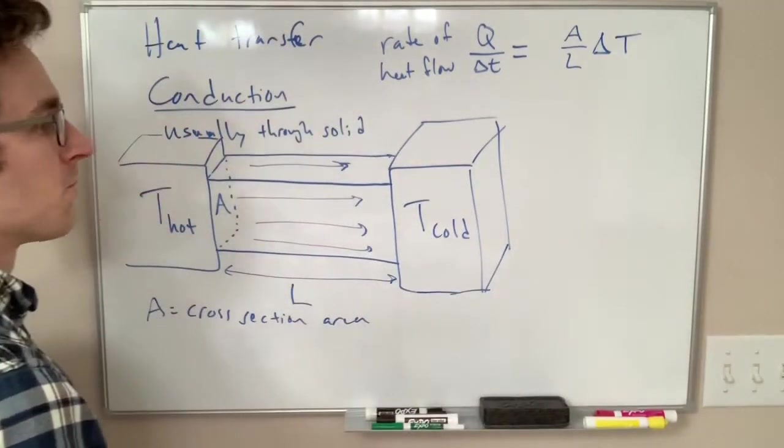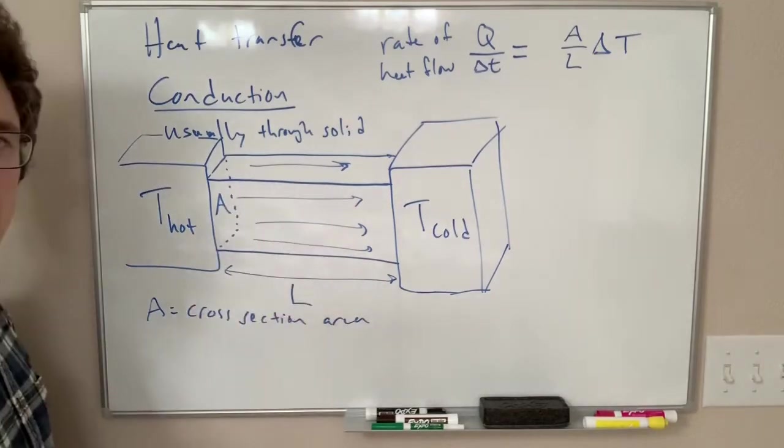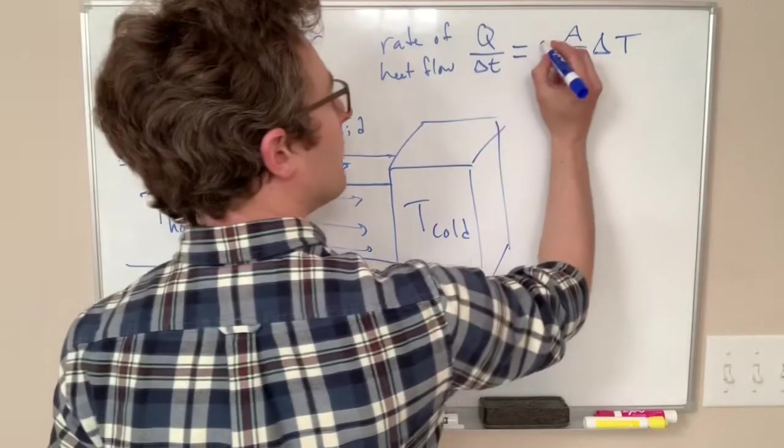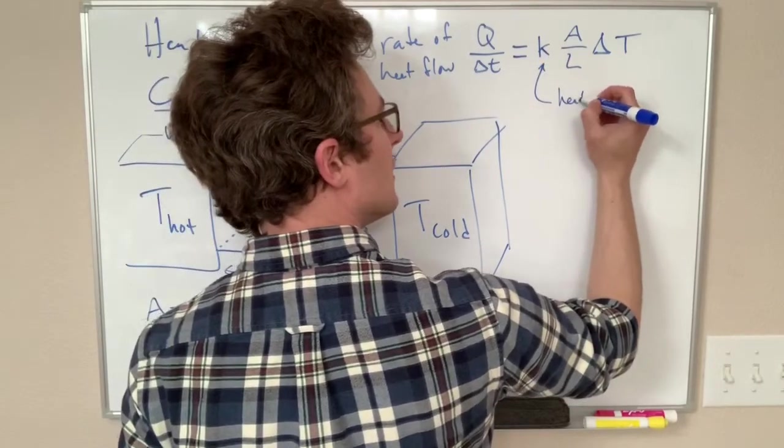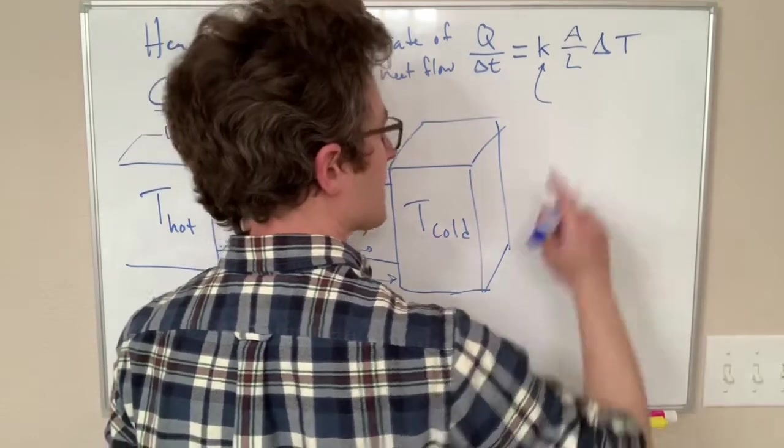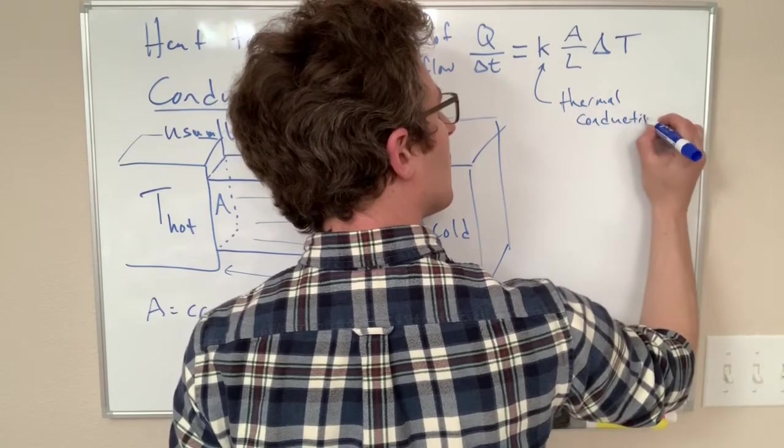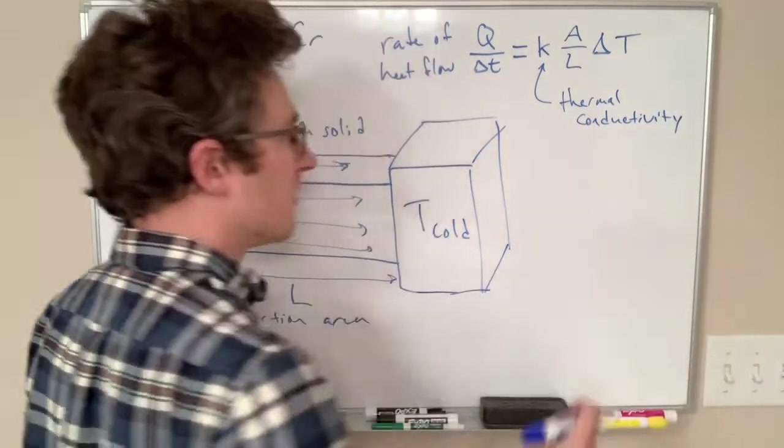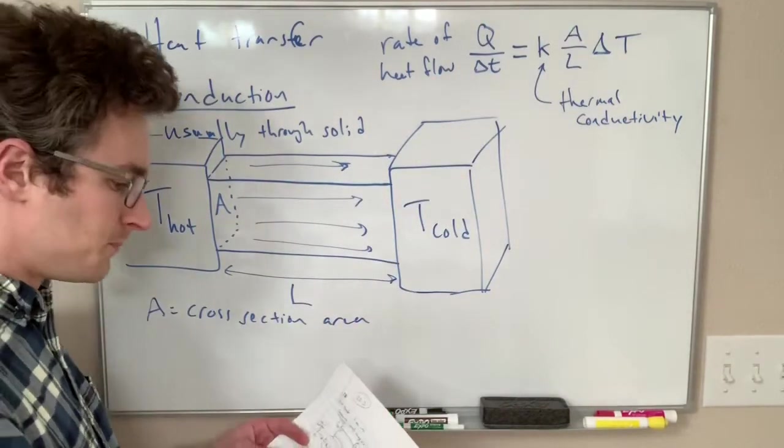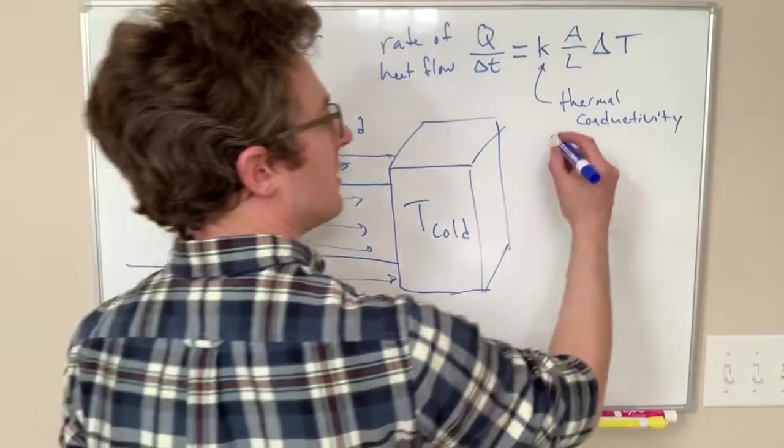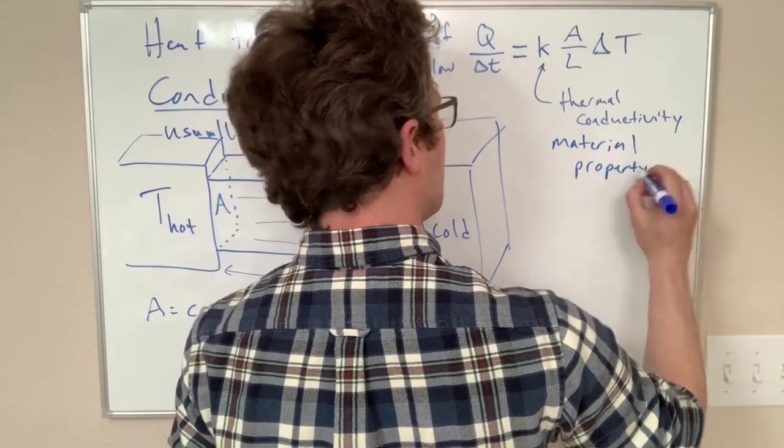And finally some property of this material, of this stuff, that tells us how easily heat can move through it. So that is this value k, this is the heat or really it's called the thermal conductivity. This is to distinguish it from the electrical conductivity which fits in a very similar looking equation. So the thermal conductivity is a property of whatever material this conduction is happening through.